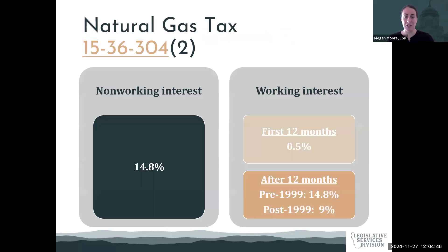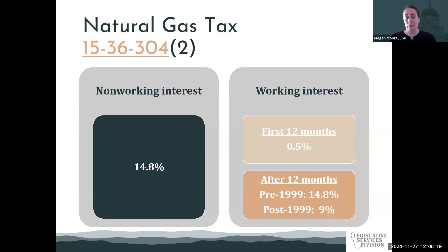With that in mind, we'll discuss natural gas taxation, contained in 15-36-304, subsection 2. The statute contains a number of complex-looking tables, so my goal is to provide a high-level overview. For the non-working interest for natural gas, the tax rate is 14.8%. For the working interest, there's what we call a tax holiday — not called that in statute, but commonly referred to that way. For the first 12 months of production, natural gas is taxed at 0.5%. After that 12-month holiday, pre-1999 wells pay a 14.8% tax and post-1999 wells pay a 9% tax.